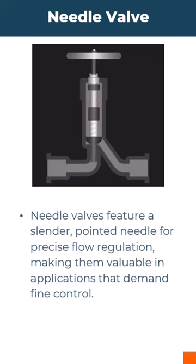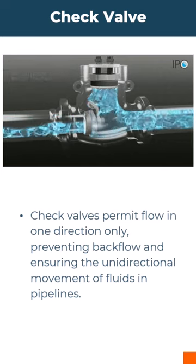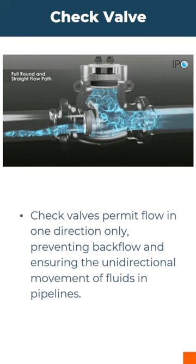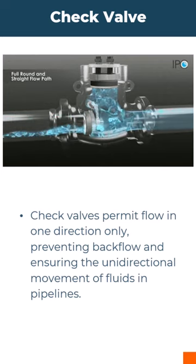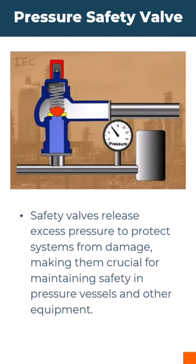Needle valves feature a slender pointed needle for precise flow regulation and fine control. Check valves permit flow in one direction only, preventing backflow movement in pipelines. Safety valves release excess pressure to protect pressure vessels and other equipment from damage.